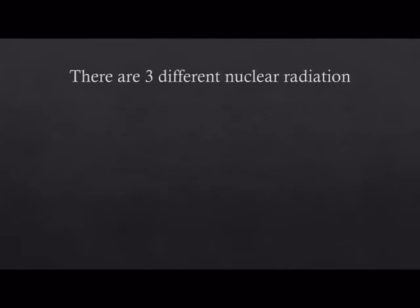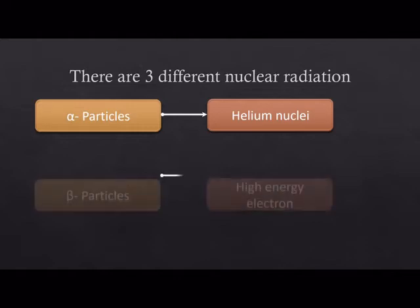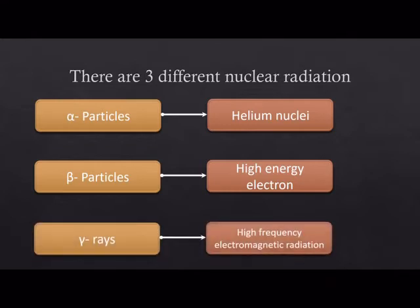In order to achieve a stable state they give out radiations. There are three different nuclear radiations. Alpha particles have two protons and two neutrons, basically they are helium nuclei. Beta particles are high energy electrons. Gamma rays are high frequency electromagnetic radiation.